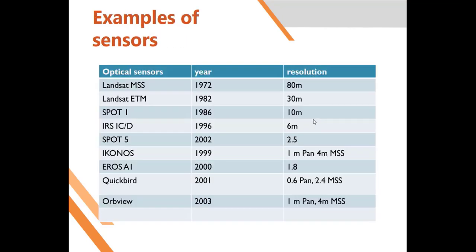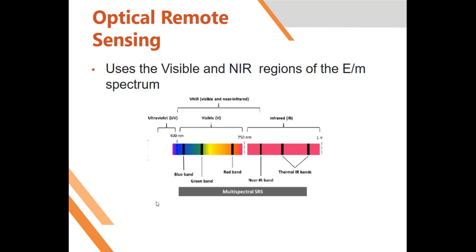Examples of sensors include the Landsat Multispectral Scanner (MSS), launched in 1972 at a resolution of 80 meters, and later the Landsat Enhanced Thematic Mapper (ETM) in 1982 at a resolution of 30 meters. There is also SPOT, IKONOS, QuickBird, WorldView, and many more sensors in orbit that we can use for remote sensing.